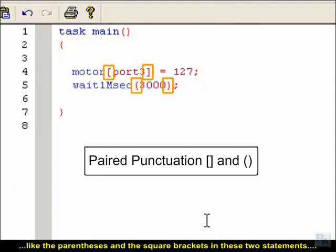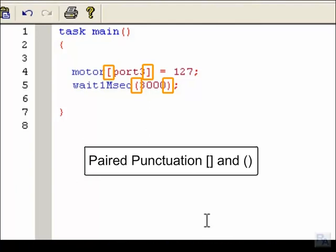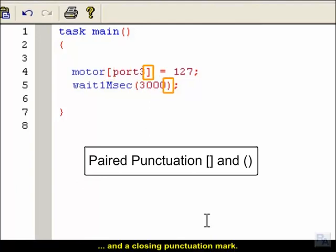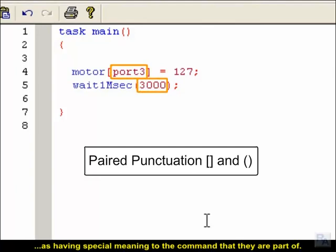Punctuation pairs, like the parentheses and the square brackets in these two statements, are used to mark off special areas of code. Every punctuation pair consists of an opening punctuation mark and a closing punctuation mark. The punctuation pair designates the area between them as having special meaning to the command that they are part of.